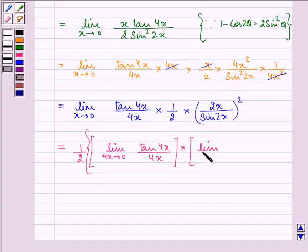Limit when x approaches 0 then 2x also approaches to 0. So we have limit 2x approaching 0, 2x upon sin 2x. This is whole square, so again we have limit 2x approaches 0, 2x upon sin 2x.